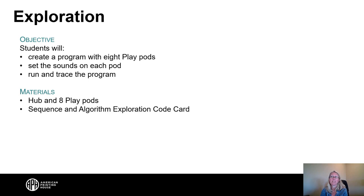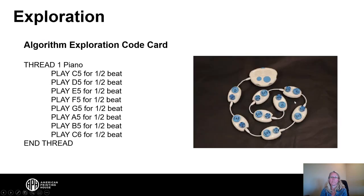Start by giving them the sequence and algorithm exploration code card. Tell them this is like a list of instructions for how to create a song with code with the Code Jumper kit. Students will then try to set up their pods so that their app is identical to this code.